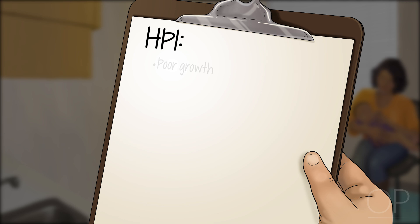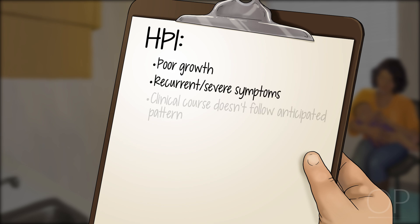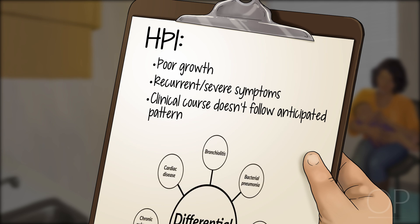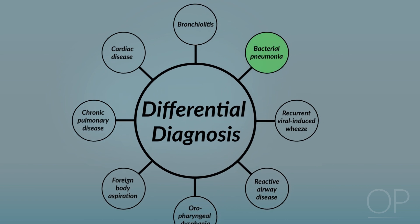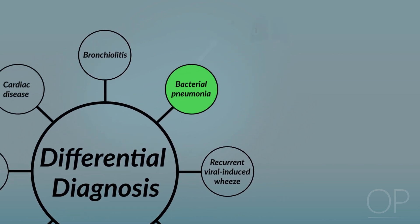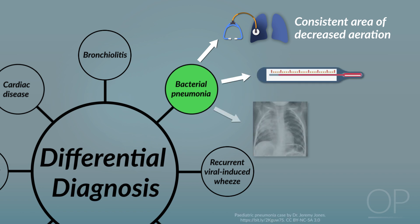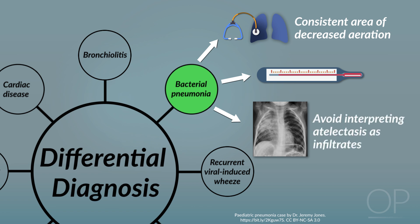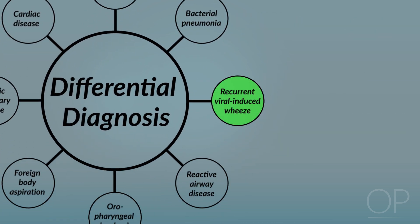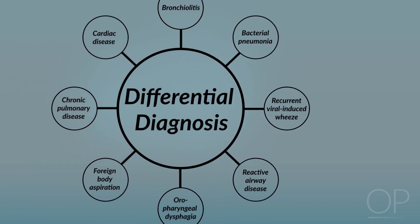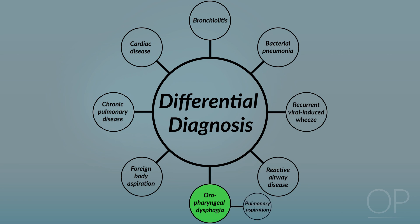Unusual features in the history, such as poor growth, recurrent or severe symptoms, or a clinical course that does not follow the anticipated pattern, should prompt consideration of alternative diagnoses. Bacterial pneumonia is a frequent consideration, particularly when auscultation reveals a consistent area of decreased aeration, or when there is a high or persistent fever. Chest x-ray may be helpful in this situation, but caution must be taken to avoid over-interpretation of atelectasis as an infiltrate. Recurrent viral-induced wheeze or reactive airway disease can be difficult to distinguish from bronchiolitis. Additional considerations may include oropharyngeal dysphagia leading to pulmonary aspiration, foreign body aspiration, chronic pulmonary disease such as cystic fibrosis, or cardiac disease such as heart failure.